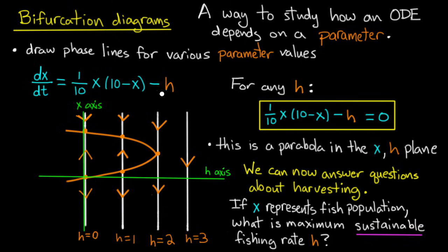Now h would represent some fishing rate, some rate at which I catch fish and remove them from the lake. Now my question for you would be: what is the maximum sustainable fishing rate? At what rate do I know that I can fish without killing off the fish population entirely?